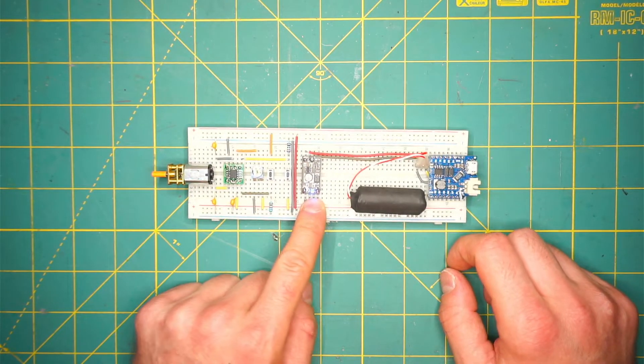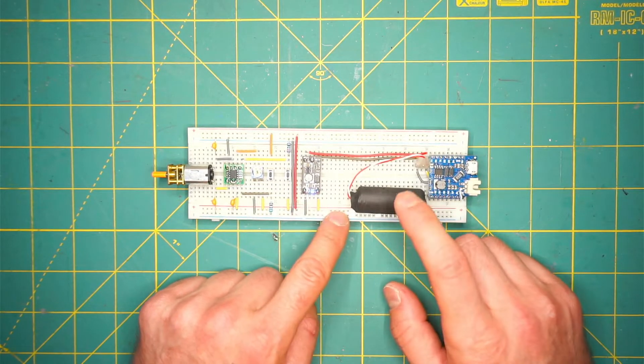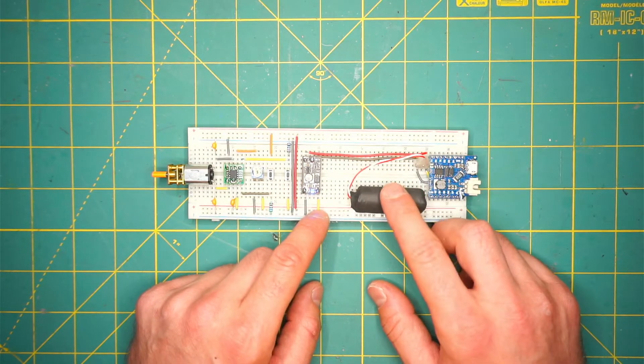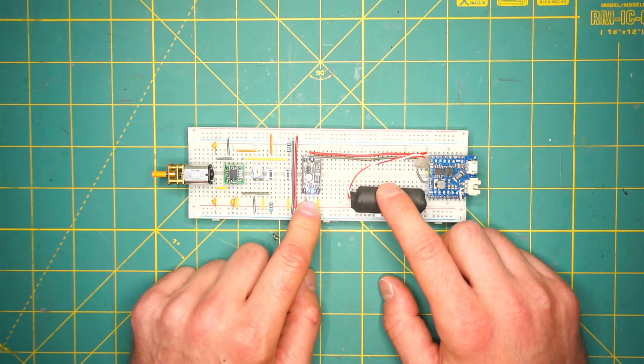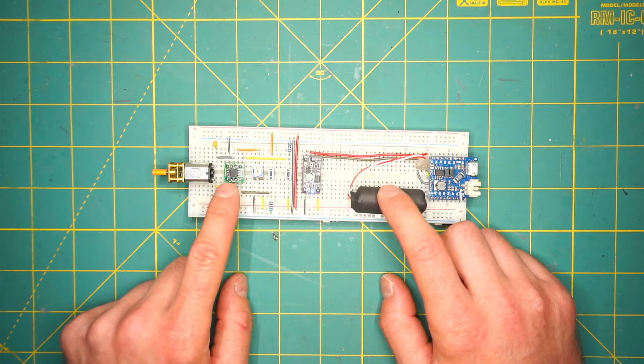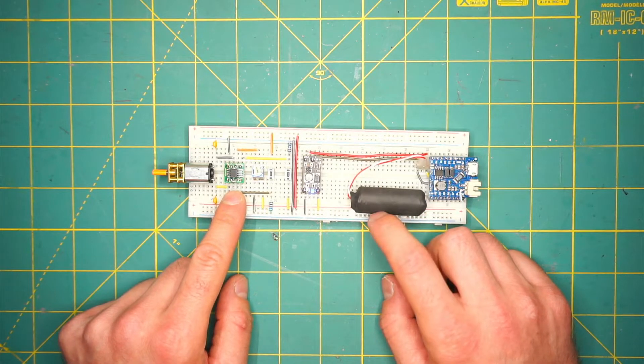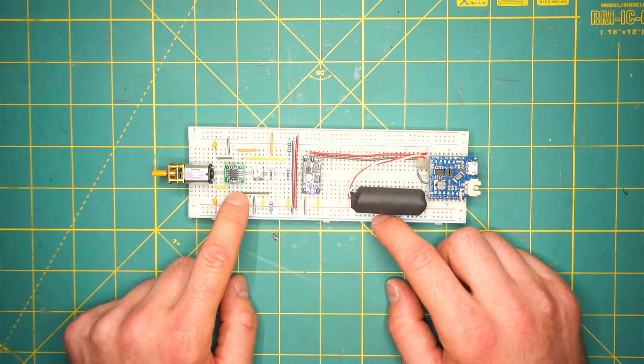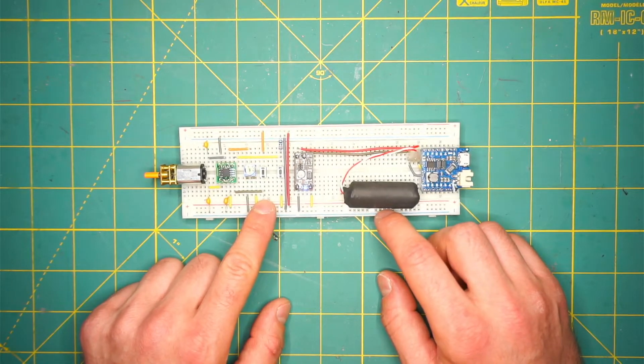The next IC is a boost converter. It takes the 3.7 or 3.3 volts of the battery and boosts it up to 8 volts so we can spin the motor with the correct voltage. The BA6287F can be supplied with voltages from 3.4 to 6.5 volts, so we're well inside the range.